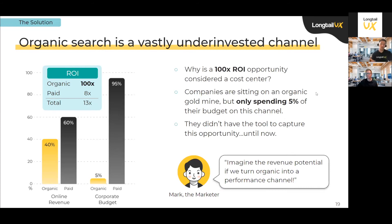How is it that SEO is still often considered a cost center? At a high level, about half of revenue comes from the organic channel, but corporate budgets are predominantly — in some cases almost exclusively — focused on paid. The paid ROI is eight times, which is a great channel to invest in, and we support paid with smart pages. But the question is: where does your next dollar go? If paid pages aren't converting well, you can throw more money at Google, or you can really embrace SEO with the right tools, pages, and expertise to capture this massive ROI opportunity.